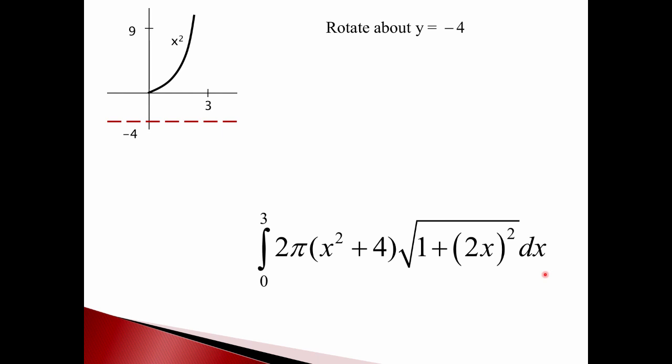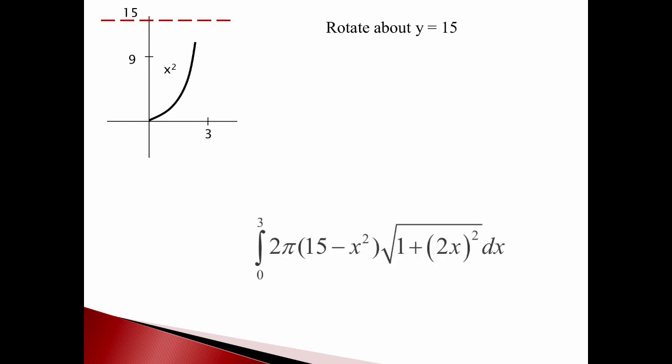So one last thing, suppose I wanted to rotate this around a really, really big axis, and x is way up above it. Same idea works, but our circumference would be 2 pi times the radius. Now my radius is from 15 down to x squared.